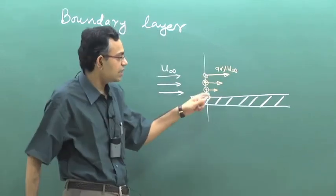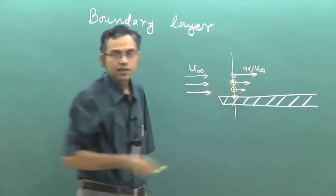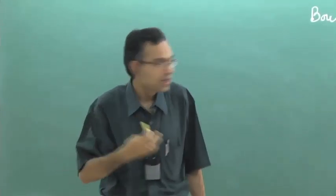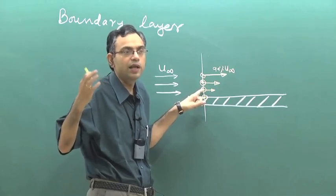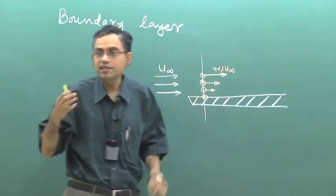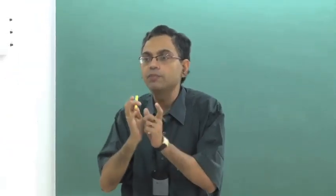A fluid element directly in contact with the solid boundary is slowed down by it. But fluid located further away is not in direct contact with the plate, yet it is also slowed down. How does it understand that there is a plate? There must be a messenger in the fluid that transmits the message that a solid boundary has created a momentum disturbance. That messenger is nothing but the viscosity of the fluid.